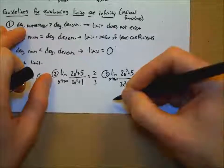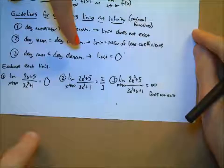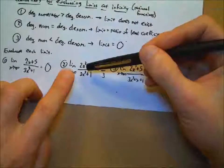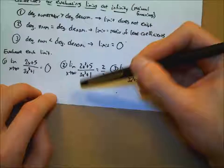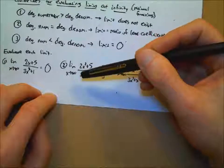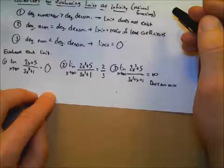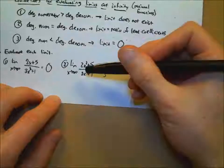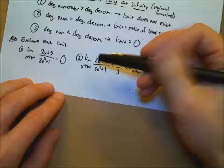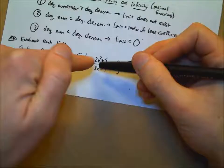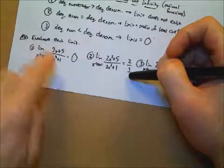For the equal-degree case: if it's cubed and cubed, it's negative infinity over negative infinity — the negatives cancel, still two-thirds. For the smaller-numerator case, it goes to zero regardless of positive or negative infinity, because the denominator grows faster. Whether the sign is positive or negative, if it goes to zero, it goes to zero. Your homework will be posted to Google Classroom.